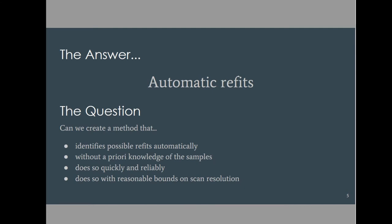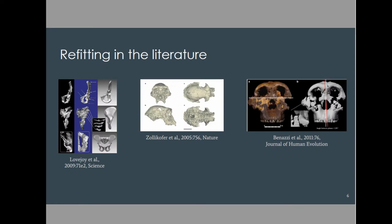We have seen virtual anthropology being used to reconstruct skeletal remains. We have the pelvis and heart of Pithecus ramidus and the cranium of Sahelanthropus tchadensis and OH5, and there are more.